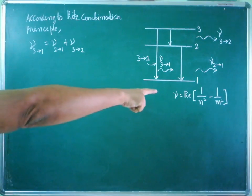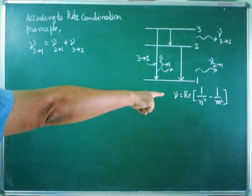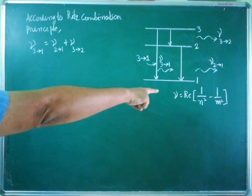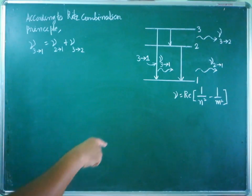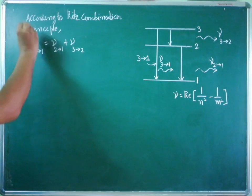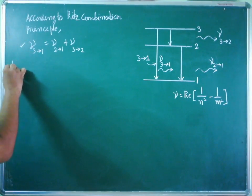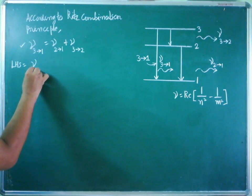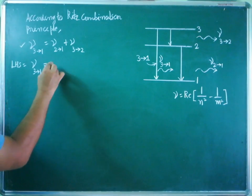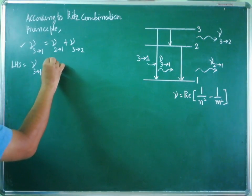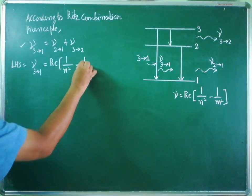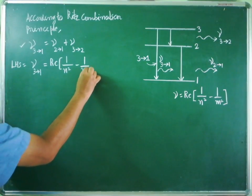To calculate the frequency, we use the fundamental formula: nu equals Rc in bracket 1 by n squared minus 1 by m squared. We will take the LHS part. In the LHS, nu 3 to 1 is given. The fundamental formula must be written as Rc times 1 by n squared minus 1 by m squared.